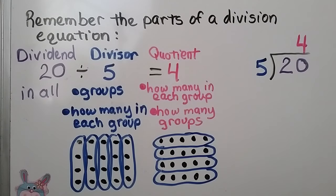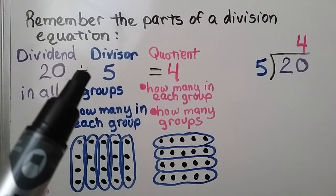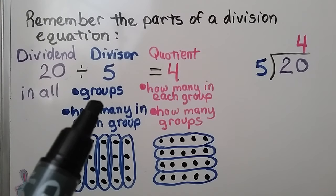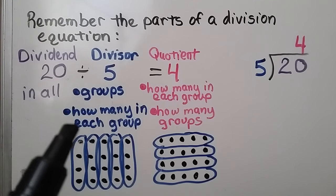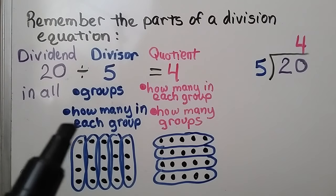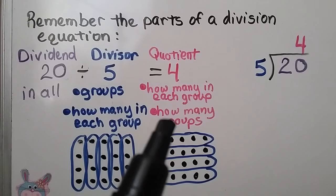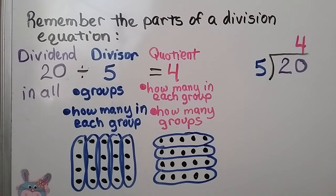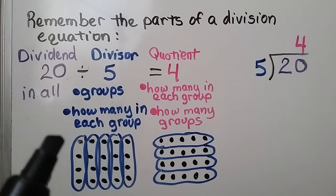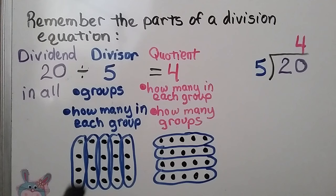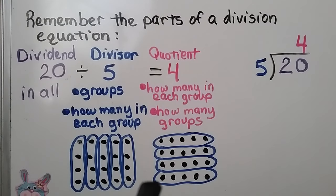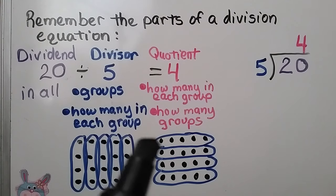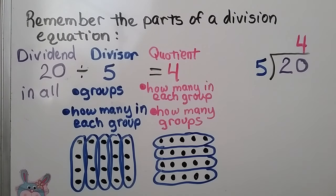Remember the parts of a division equation. The dividend is how many in all. The divisor is how many groups, then the quotient will be how many in each group. If the divisor represents how many in each group, then the quotient will represent how many groups. We can have 20 counters put into 5 groups with 4 in each group, or 4 groups with 5 in each group.